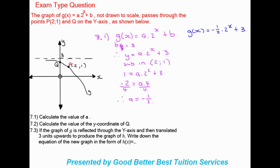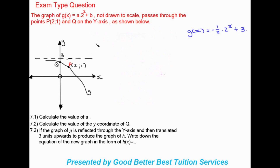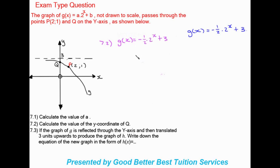Question 7.2 asks us to calculate the y-coordinate of Q. Q is the point where the graph crosses the y-axis, so this is the y-intercept. Using the equation g(x) equals minus one half times 2 to the power of x plus 3, we make x equal to zero to find the y-intercept.